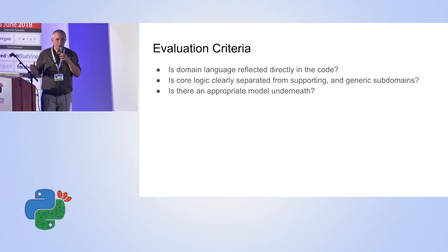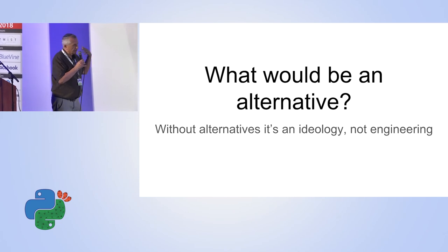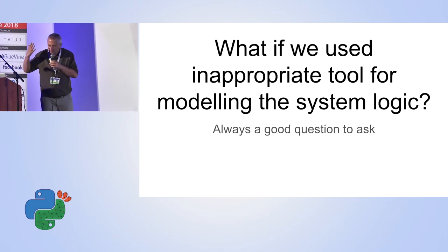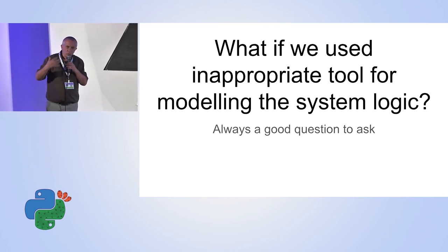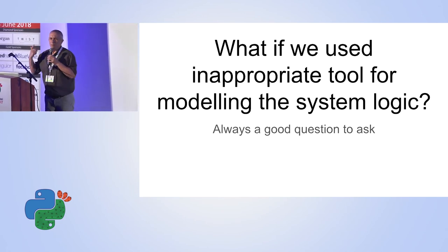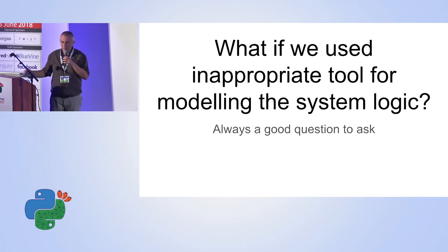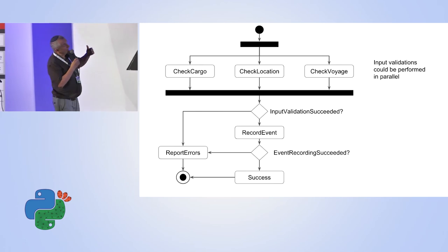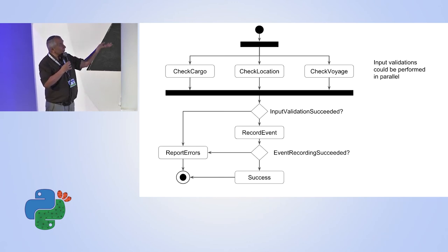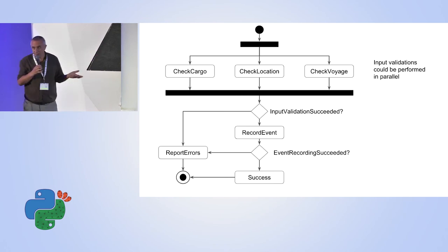If we don't have an alternative on the table, it's ideology, not engineering. So let's look at an alternative. The question is whether we used the right model. We are highly programmed for sequential execution, which is not always the case. Using a UML activity diagram, I discover that the three validations are completely parallel — there's no reason to perform them sequentially. Once done, check for any problem: if there's a problem, report it; if not, record it. That's very simple.